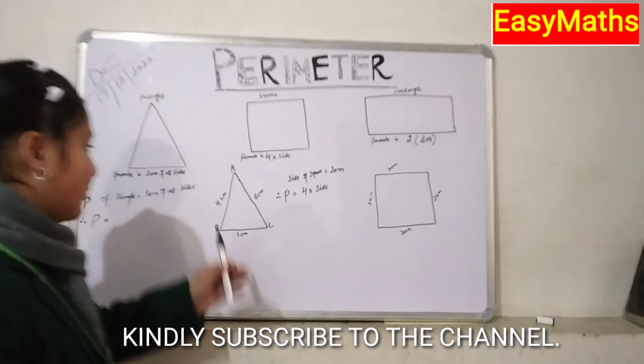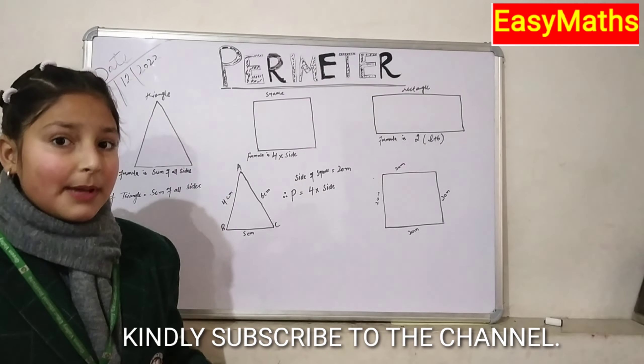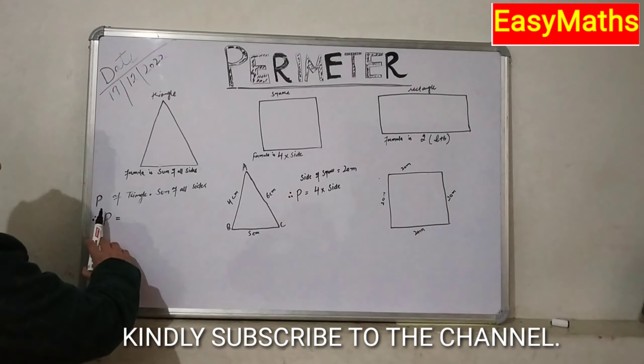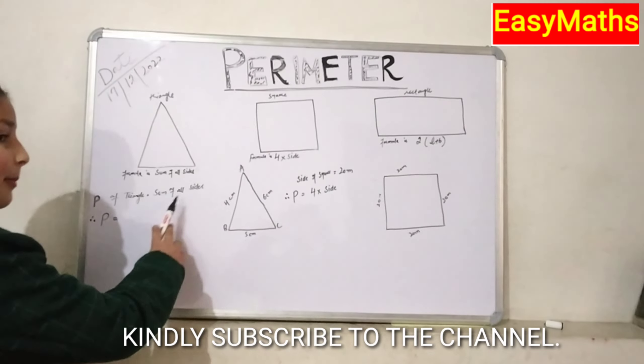Now, for example, we have a triangle and we have to find the perimeter of the triangle. So, first we will write, perimeter of a triangle is equal to sum of all sides.